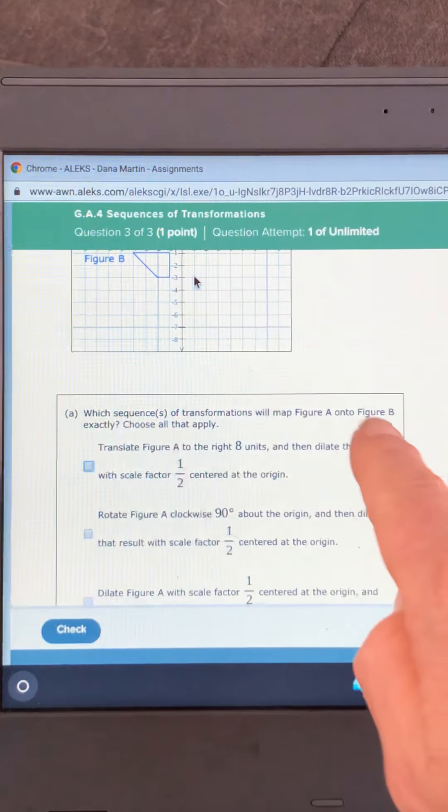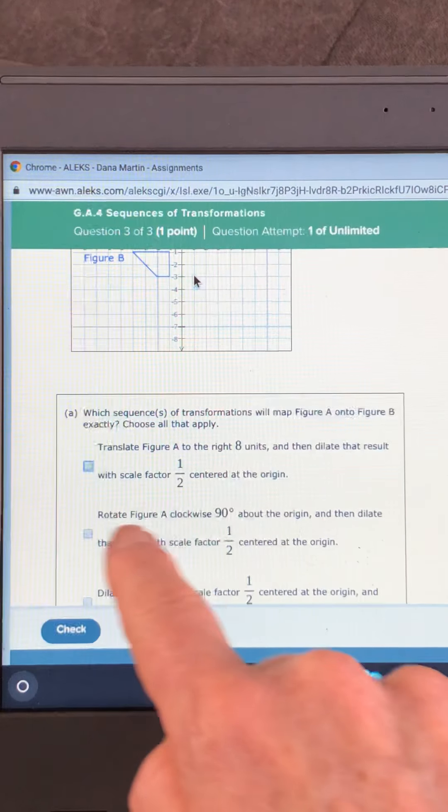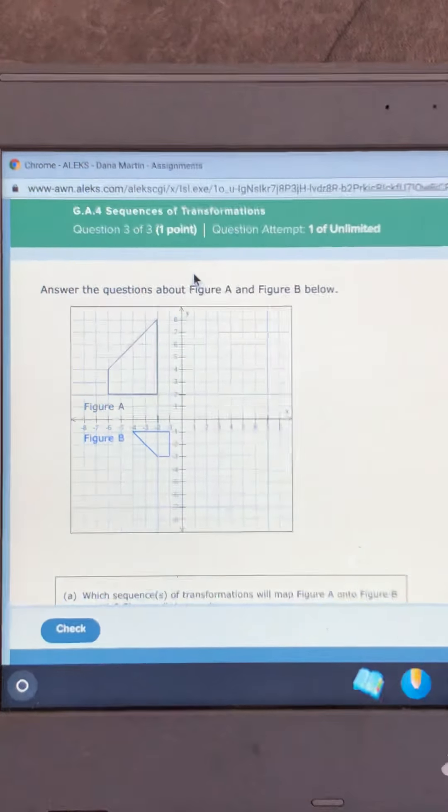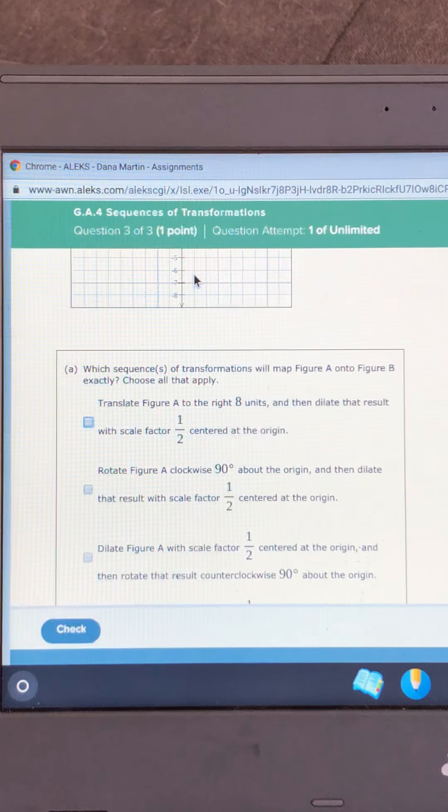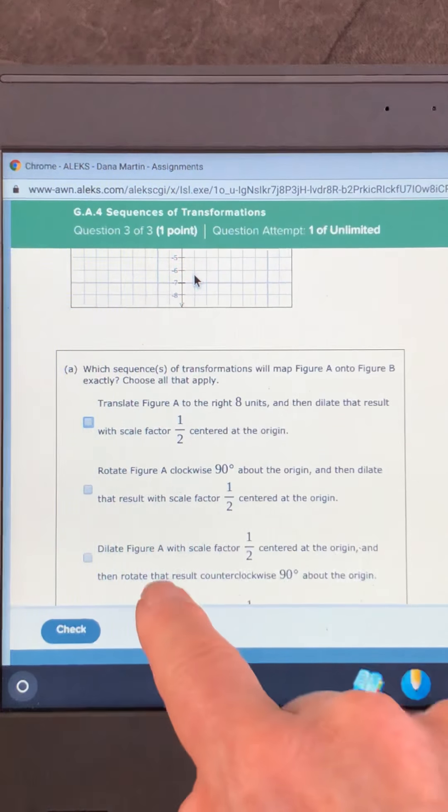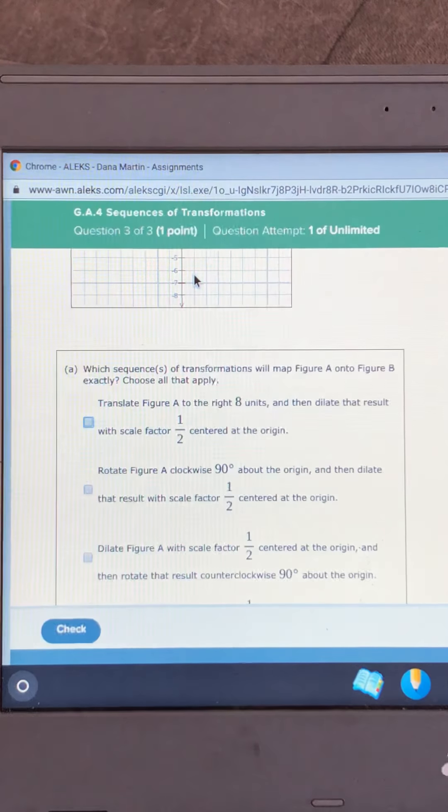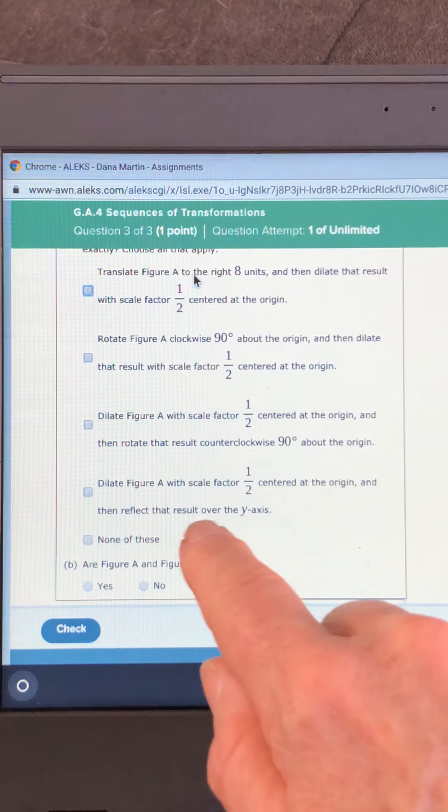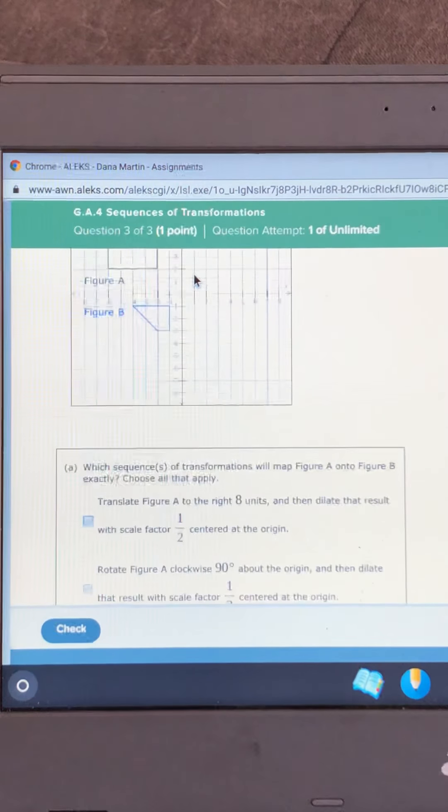So there's no translating. Nope. There's no clockwise rotation. That would mean I'd be going this way. So no. We're going to dilate it and rotate counterclockwise 90. That's going to be the answer, but I'm going to go ahead and check the last one, dilate it and reflect it over the y-axis.